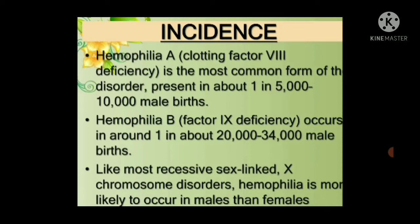Incidence: Hemophilia A, due to clotting factor 8 deficiency, is the most common form, present in about one in five to ten thousand male births. Hemophilia B occurs in around one in twenty to thirty-four thousand male births. Like most recessive sex-linked X chromosome disorders, hemophilia is more likely to occur in males than females because it is X-linked recessive and therefore does not show in females as readily as in males.